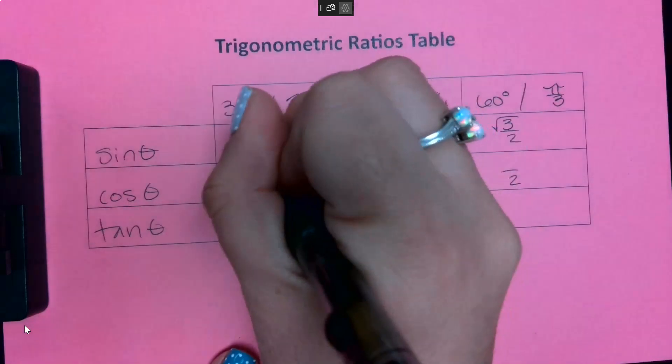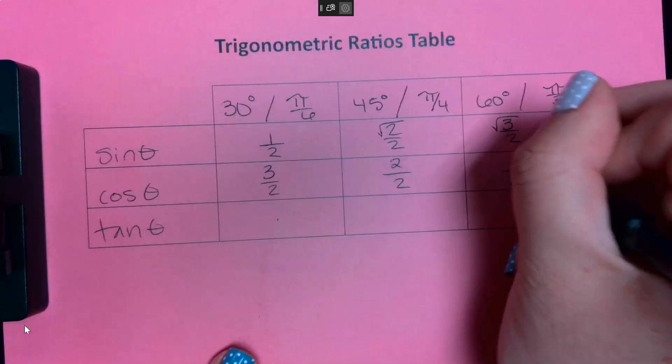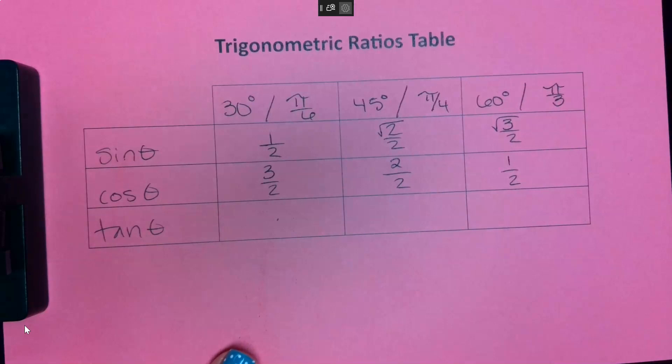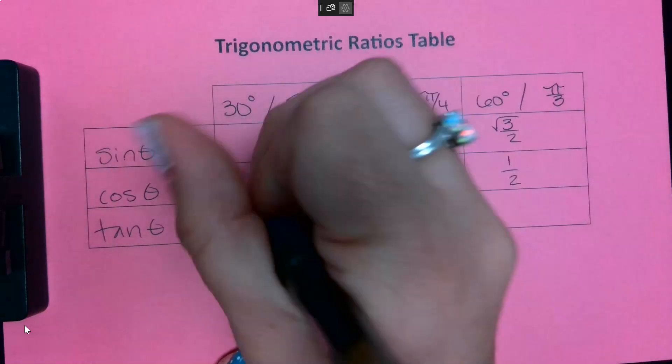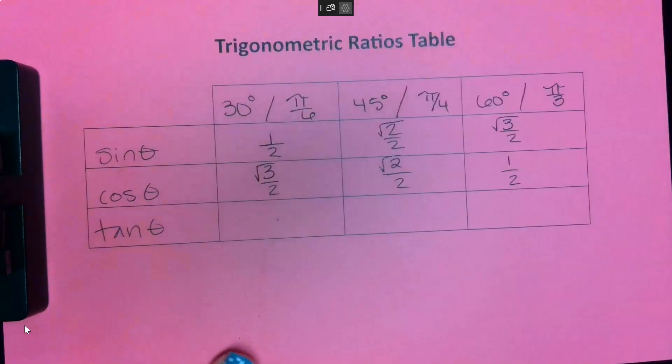Okay, and then for cosine I count down from three. And same deal here. I want to take the square roots of everything, and the square root of one is still also just one.